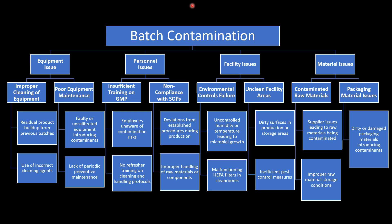Now let's take an example of how to apply fault tree analysis in an investigation. Let's assume the problem statement is batch contamination. This can be subdivided into major causes: equipment issue, personnel issue, facilities issue, and material issue. For equipment issue, sub-root causes include improper cleaning of equipment or poor equipment maintenance. Improper cleaning can lead to residual product buildup from previous batches or use of incorrect cleaning agents. Poor equipment maintenance may result in uncalibrated equipment introducing contaminants or lack of periodic preventive maintenance.